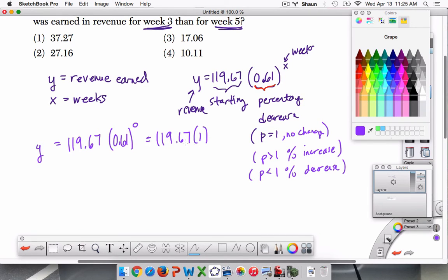So generally, in any exponential function, this number in the front is the starting value because at the start, x is 0. And this term right here will always equal 1. So all that's left is $119.67 million.